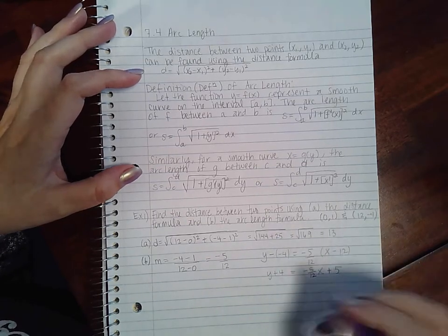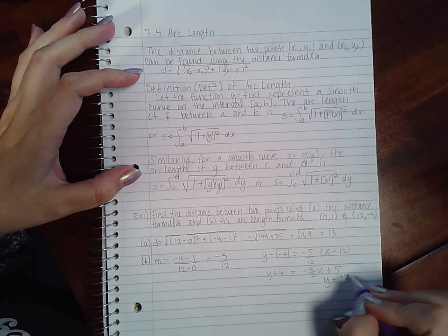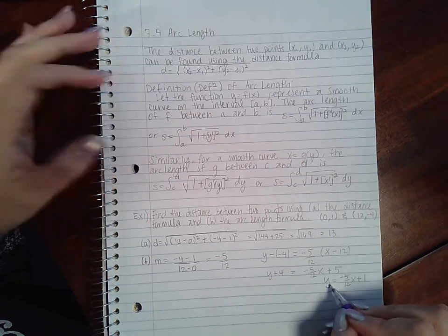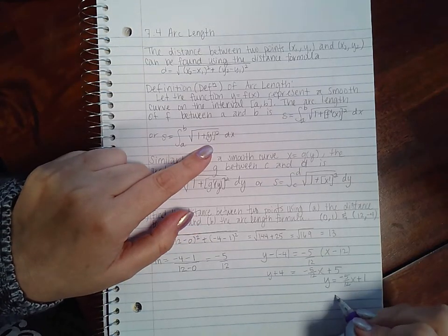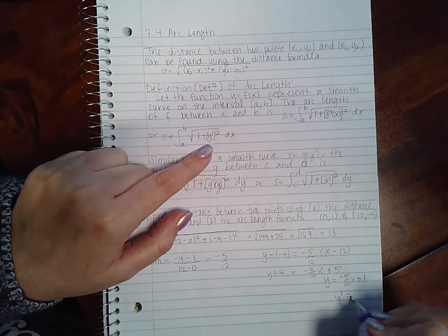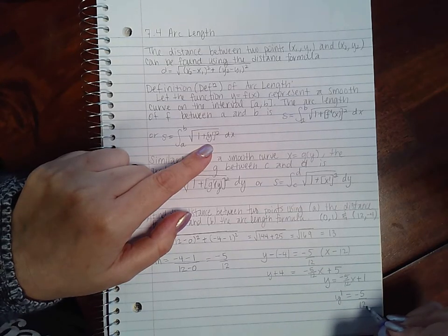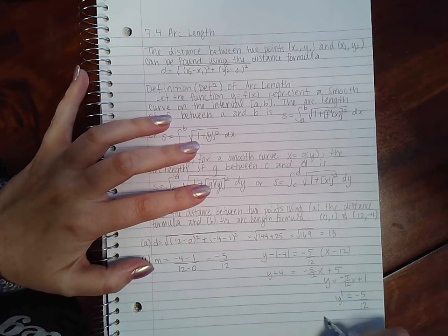If I add 4 to both sides, I get y = -5/12x + 1. So this is my function here. But in order for me to find the arc length, I need to know what's the derivative of this function, which is just -5/12. So if I square this, I will get 25/144.